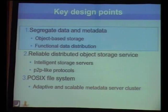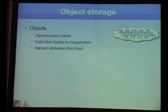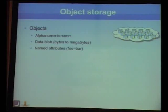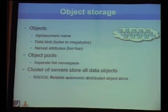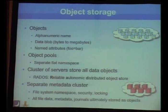Object-based storage differs from traditional file systems with fixed-sized blocks. Objects have an alphanumeric name and a data blob—like a file ranging from bytes to megabytes—and can have named attribute pairs to store metadata. Unlike files in a hierarchy, objects exist in a flat namespace inside one of many object pools in the storage cluster. The cluster of servers responsible for storing all data objects is called RADOS—a Reliable Autonomic Distributed Object Store. A separate metadata cluster handles the file system namespace, security, and locking, storing all metadata in objects in the object store.